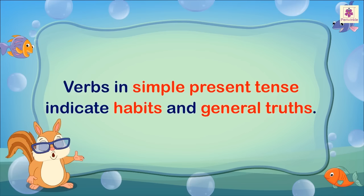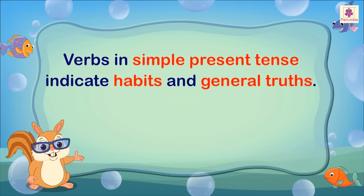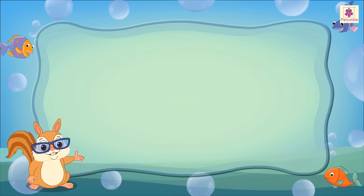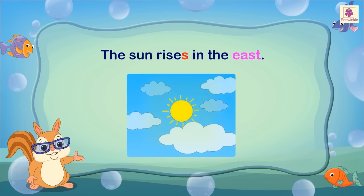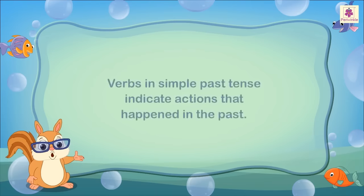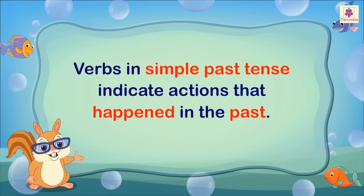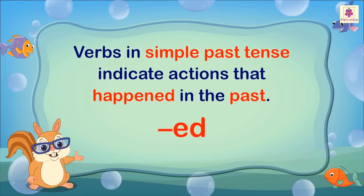Verbs in simple present tense indicate habits and general truths. In this case, the verb simply ends with 's' or 'es'. For example, 'The Sun rises in the east.' Verbs in simple past tense indicate actions that happened in the past. In this case, the verb simply ends with 'ed'.